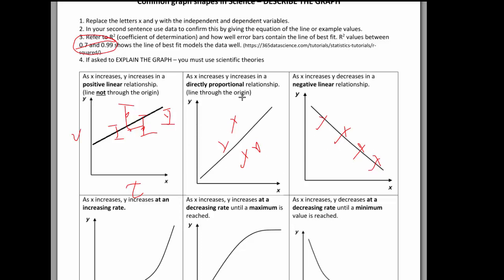Bare minimum would be three sentences, possibly more. Always start with as x increases y increases, and then tell me how that increase occurs. Second thing, give me some data to back that up. And third thing, talk about how well that line of best fit does model that data.